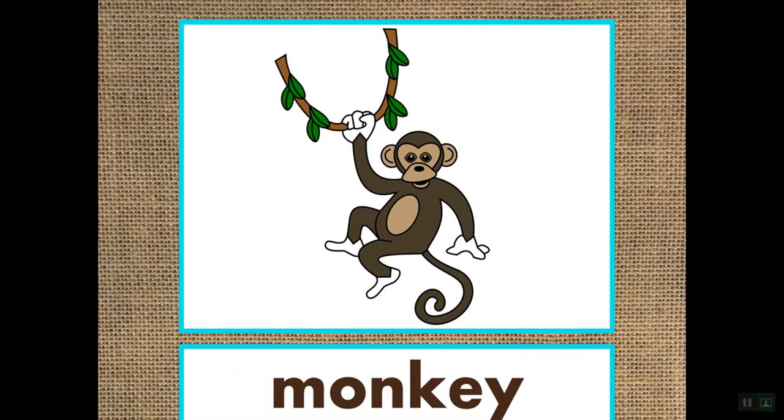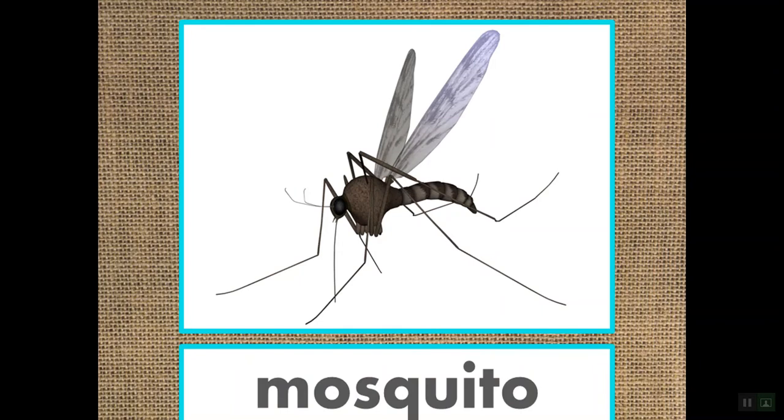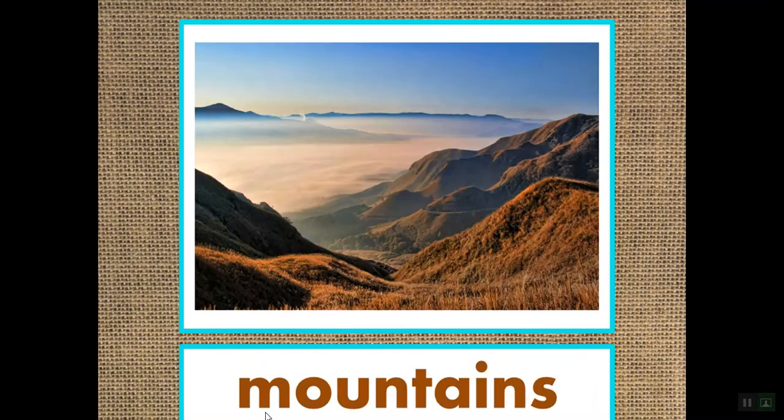Next, we have a monkey. Monkey starts with the letter M and the sound mmm. Here we have a mosquito. Go ahead and say mosquito. Once again, you can see M at the beginning and hear the sound mmm. Here we have some mountains. Mountains starts with M and the sound mmm.